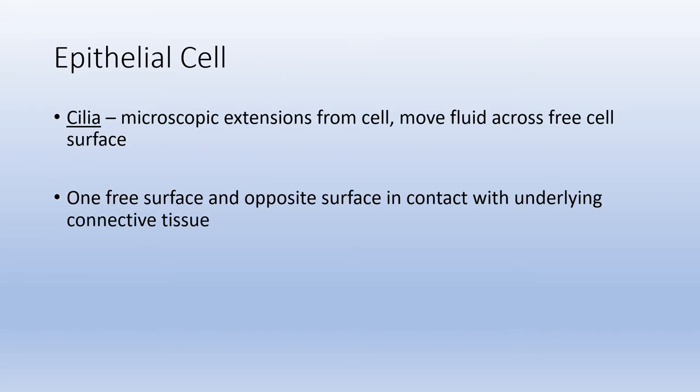Certain accessory structures are found in some epithelial cells but not all. One is cilia — microscopic extensions on individual epithelial cells whose purpose is to move fluid across the free surface. In the respiratory tract, cilia move the phlegm that traps particles to keep them from getting down into the lungs. Epithelial cells have one free surface, and the opposite surface is in contact with underlying tissue, which is usually connective tissue.